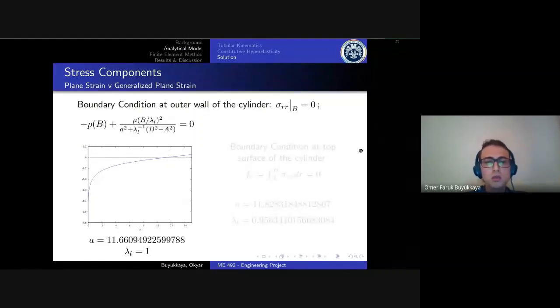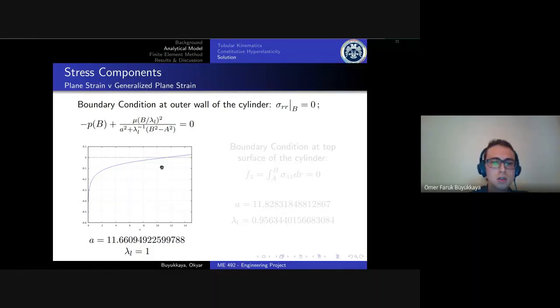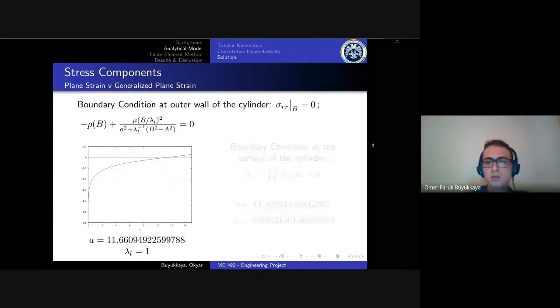I said we have two situations, two conditions which are plane strain and generalized plane strain cases. For plane strain case we know lambda_l is equal to one, and the boundary condition at the outer wall of the cylinder is enough to solve what A is. It can be seen that it is around 11.6—it's found to be about that value.